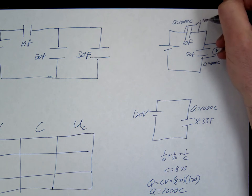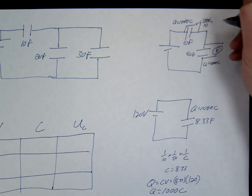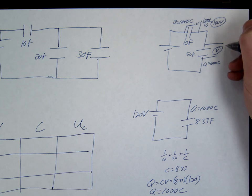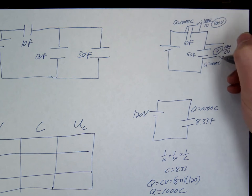So this is 1000 over 10, gives me 100 volts. This one is 1000 over 50. That gives me 20 volts.